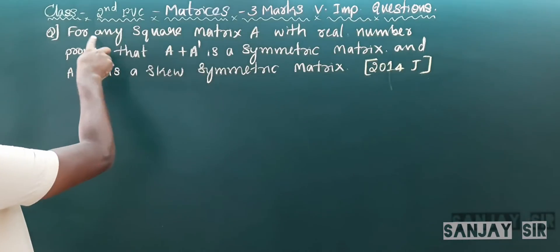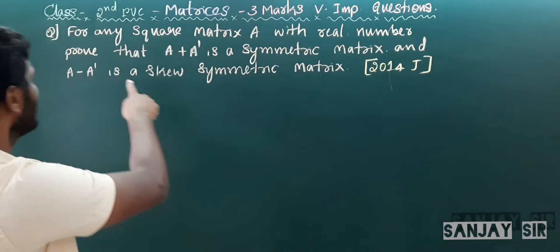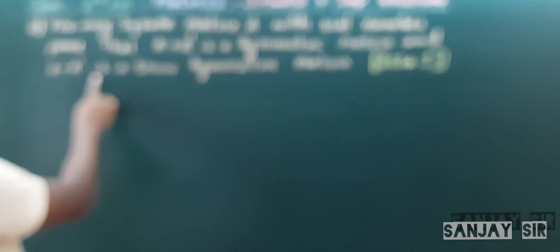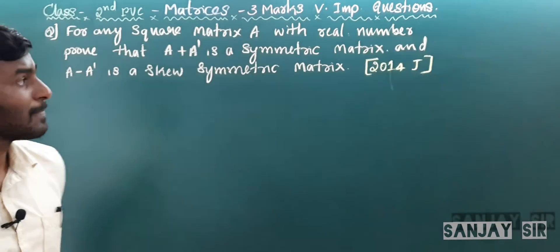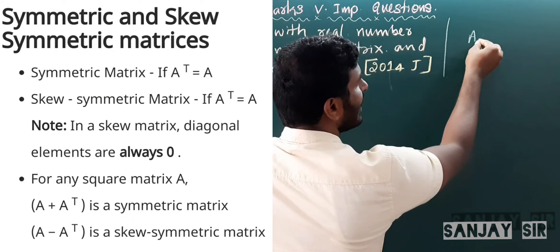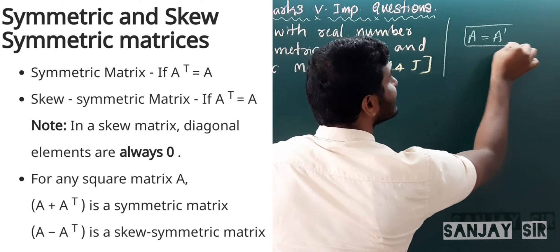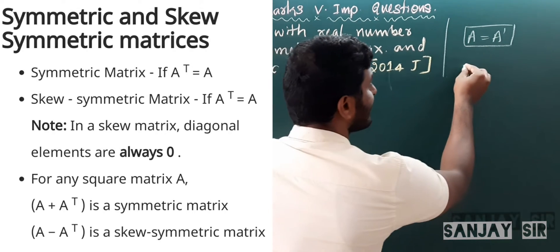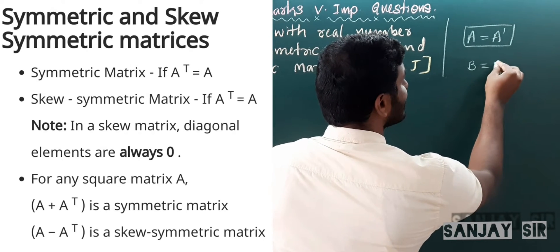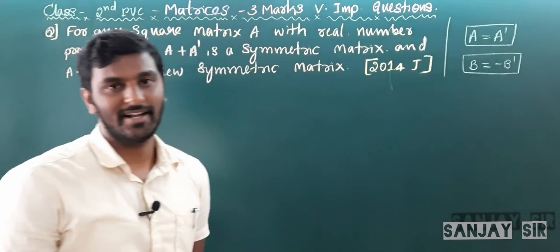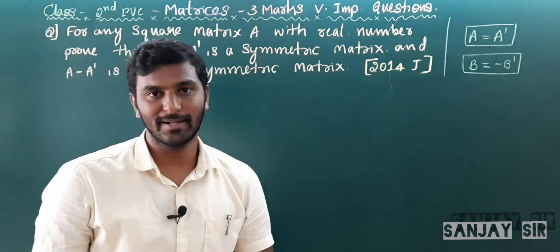The next question: for any square matrix A with real numbers, prove that A + A' is a symmetric matrix and A − A' is a skew-symmetric matrix. The definition of symmetric matrix: A = A'. And for skew-symmetric matrix: B = −B'.